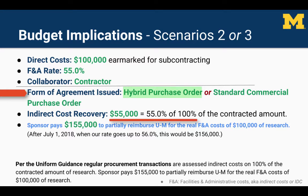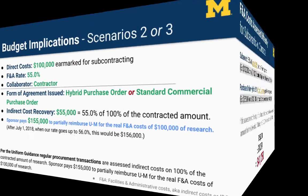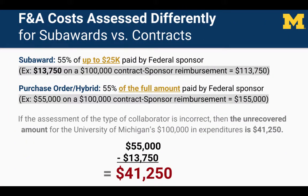which is equal to 55% on 100% of the contracted amount. In Scenario 3, when purchasing goods and services from an organization that are available commercially, the collaborator is classified as a contractor and a purchase order is issued; therefore the indirect cost recovery is $55,000, which is equal to 55% of 100% of the contracted amount. So if an organization is classified as a subawardee or subrecipient when it should have been classified as a contractor, U of M fails to recover the full amount of indirect costs it's entitled to. In our scenarios, the unrecovered amount is $41,250.